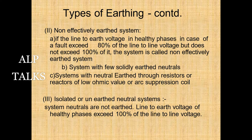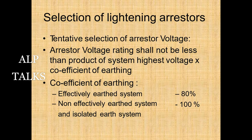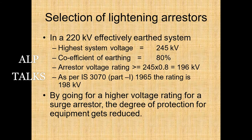Tentative arrester selection: arrester voltage rating shall not be less than the product of the highest system voltage and the coefficient of earthing — 80% for effectively earthed systems and 100% for non-effectively earthed and isolated earthed systems. For example, in a 220 kV effectively earthed system with highest voltage of 245 kV: 245 × 0.8 = 196 kV, so a standard rating of 198 kV is selected. However, by going for a higher voltage rating for a surge arrester, the degree of protection offered to the equipment is reduced.